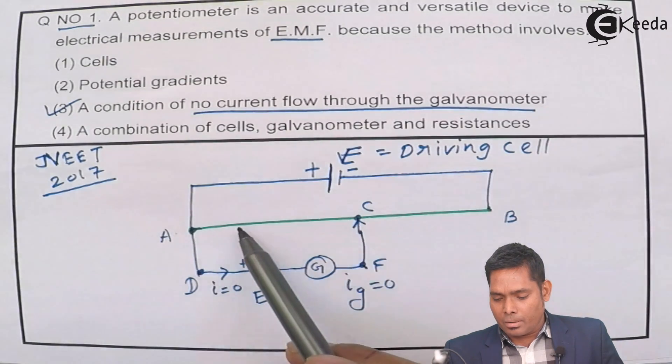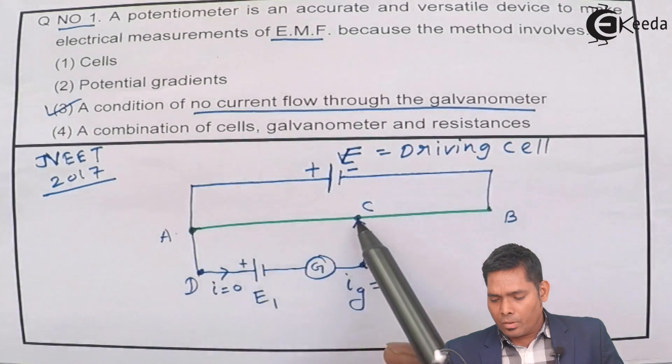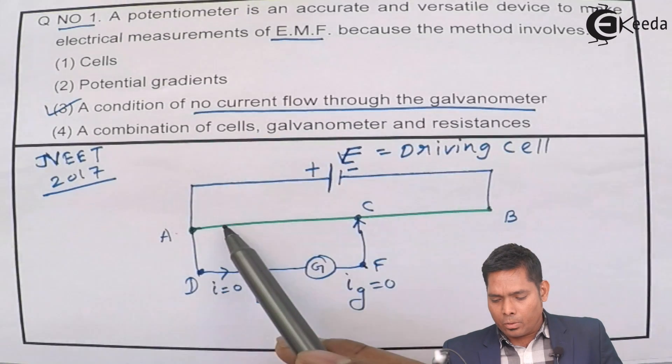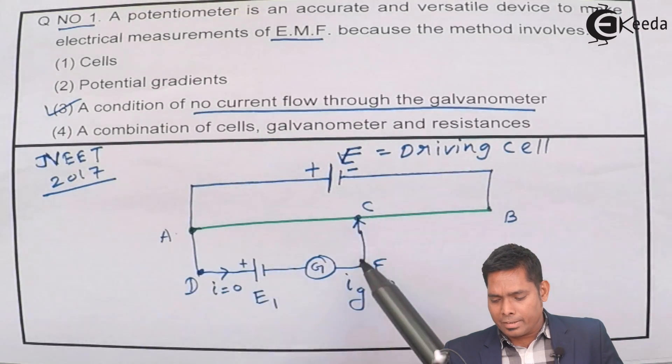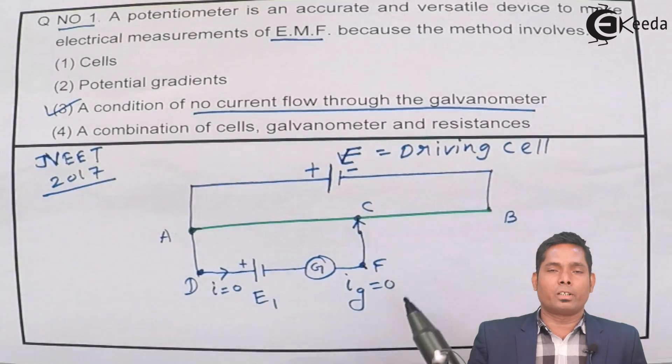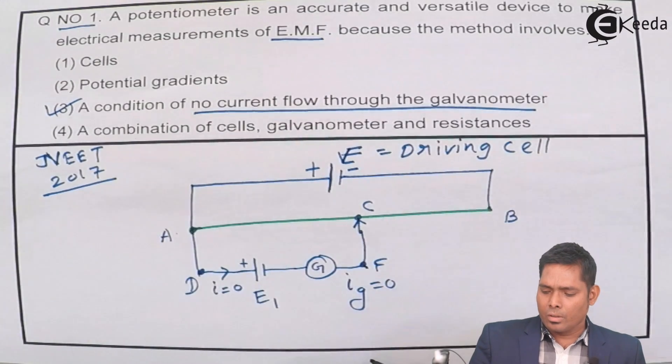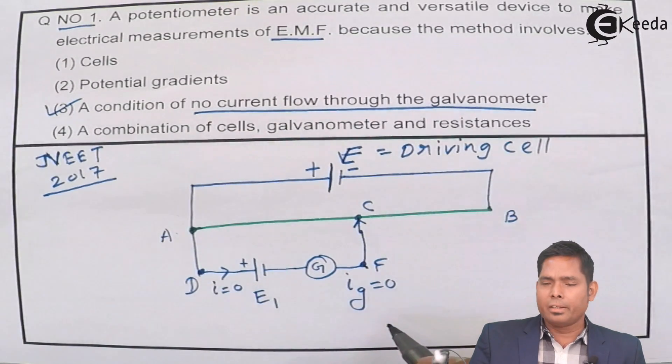Because when you touch the jockey at different points, while starting the experiment, you will find a point where exactly the galvanometer will show no deflection, that is zero deflection. It is called null deflection.